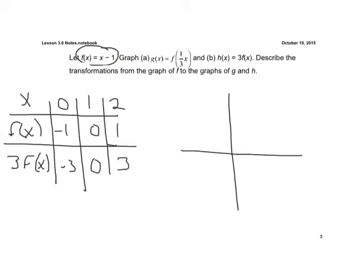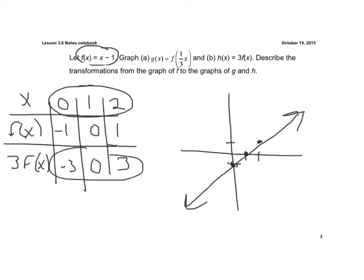Let's graph. First we graph our original function x minus 1 — y-intercept at negative 1, slope of 1, up 1 right 1. Since it's a vertical transformation, the x-coordinate does not move. Our ordered pairs are (0, negative 3), (1, 0), and (2, 3). Connecting our points, we have a vertical stretch by a factor of 3 because 3 is what we're multiplying to our function, so it stretches away from our x-axis.